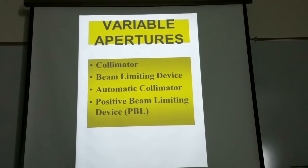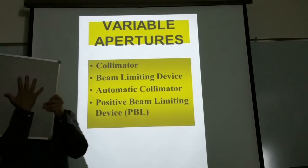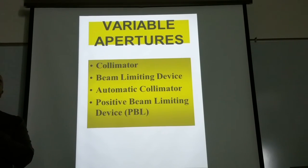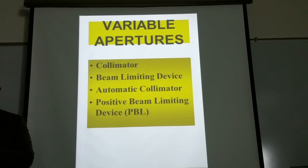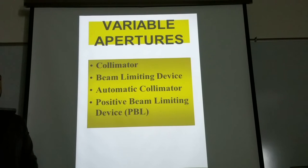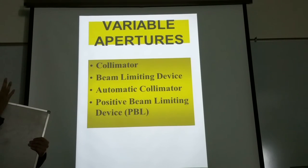For example, if using a 14 by 17 image receptor but x-raying a hand, you can still limit the beam down to just the size of the hand. Once the collimator automatically opens to 14 by 17, you simply turn the knobs down to the area of interest.